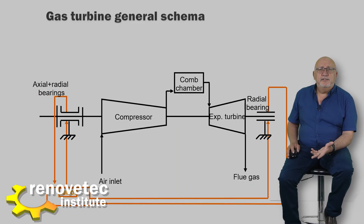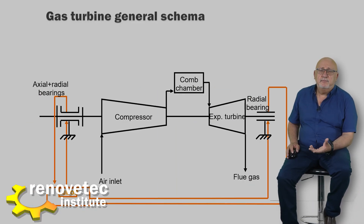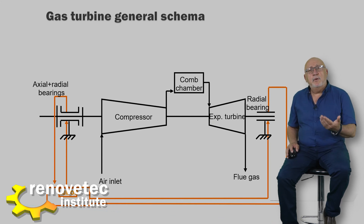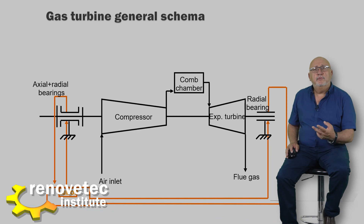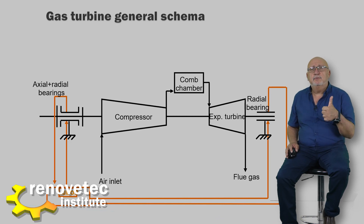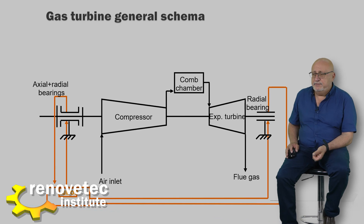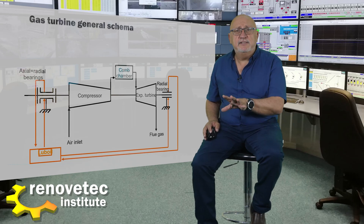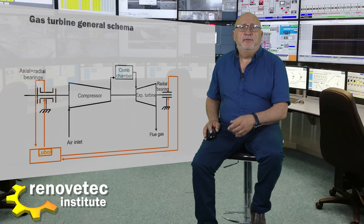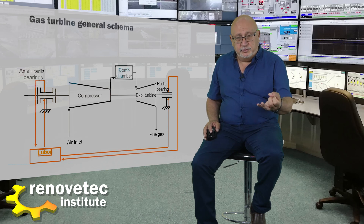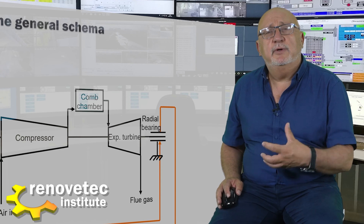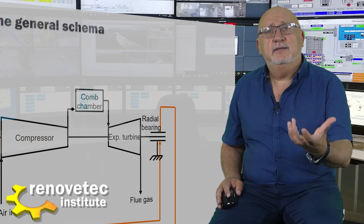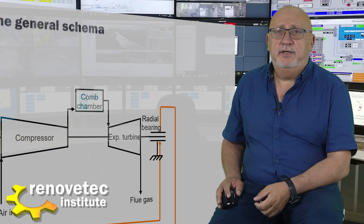In order to reduce friction, we need a system that supplies oil for two functions: first, to lubricate, and second, to cool. We therefore have a lube oil system with pumps, a reservoir, filters, and a system to evacuate the heat captured in the bearings.